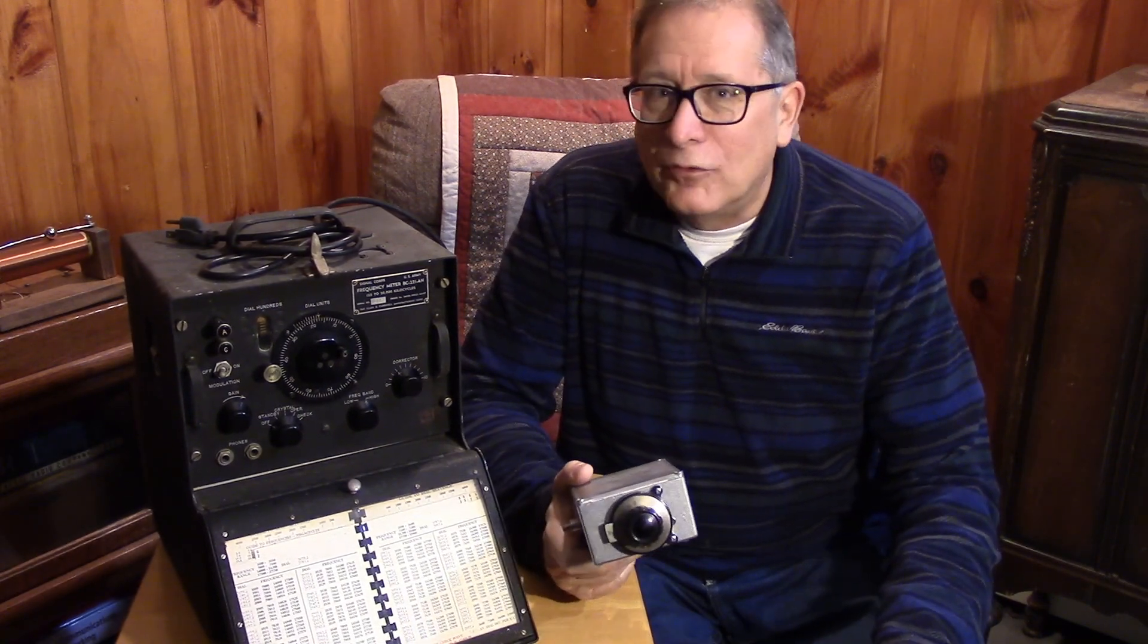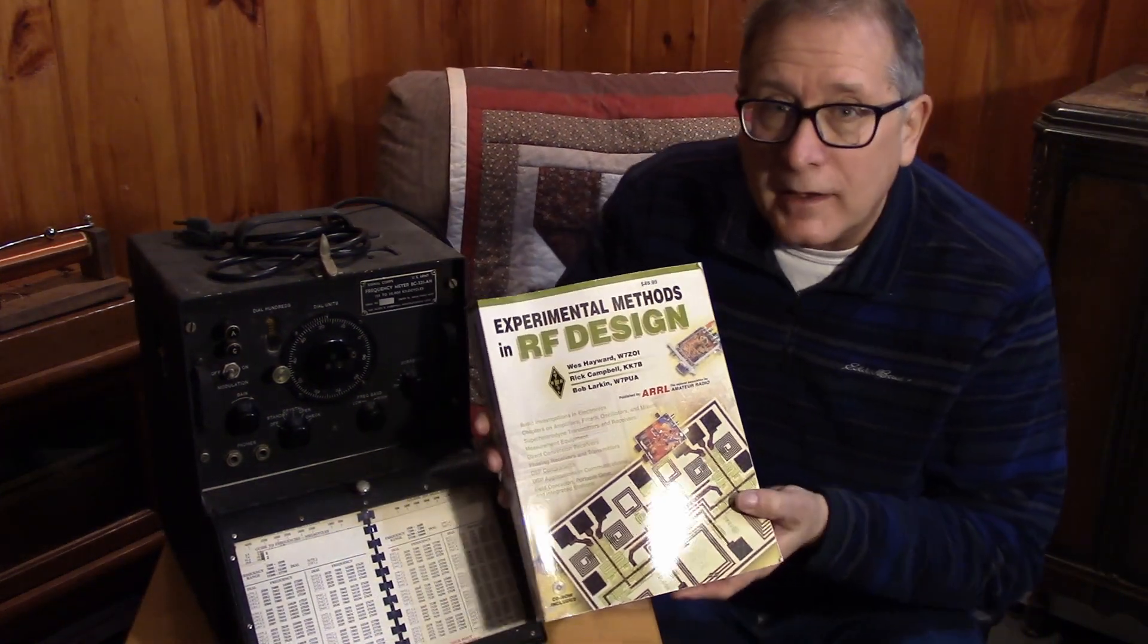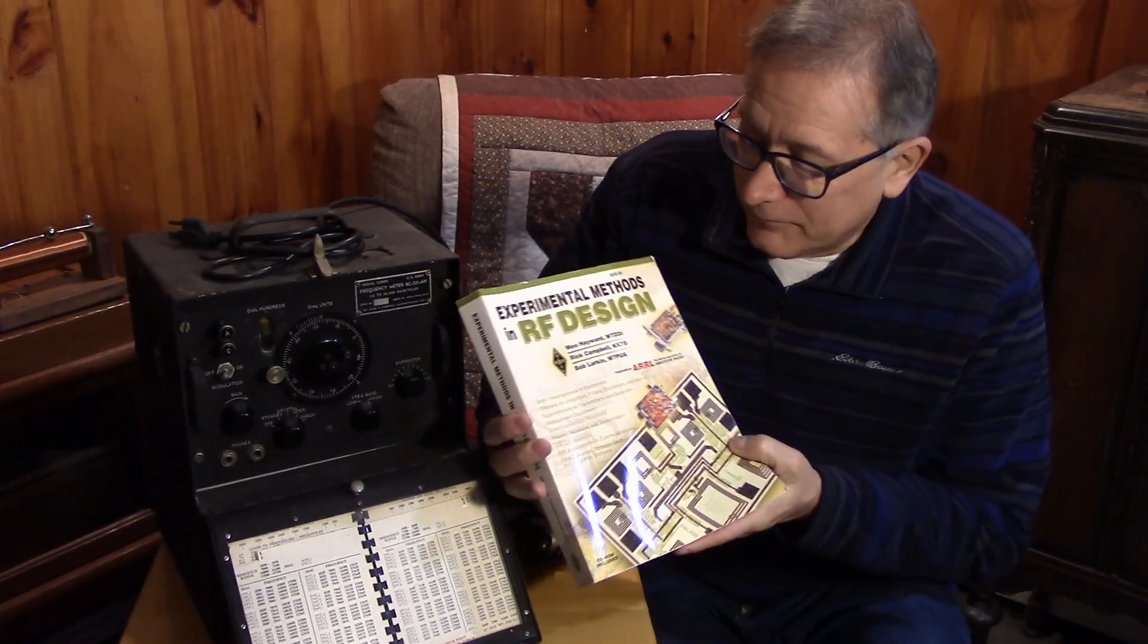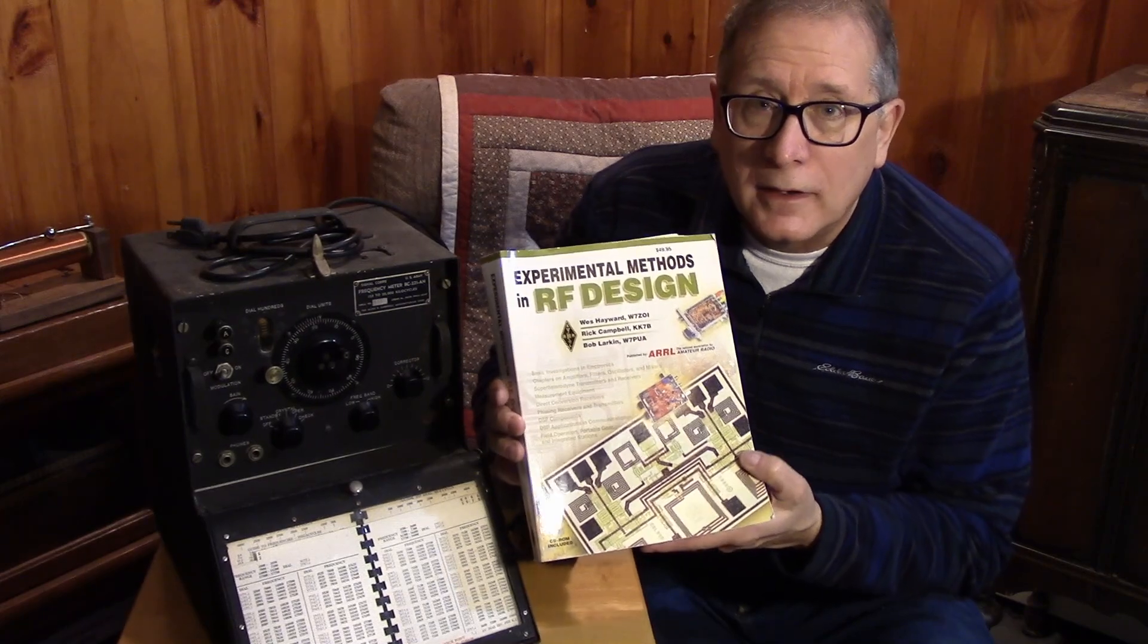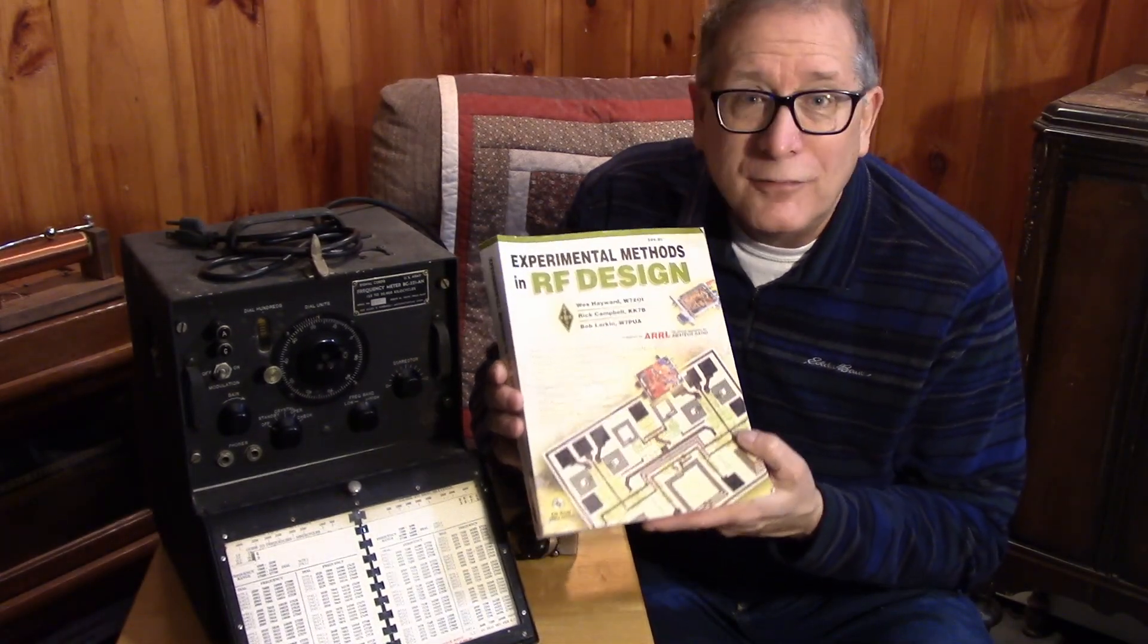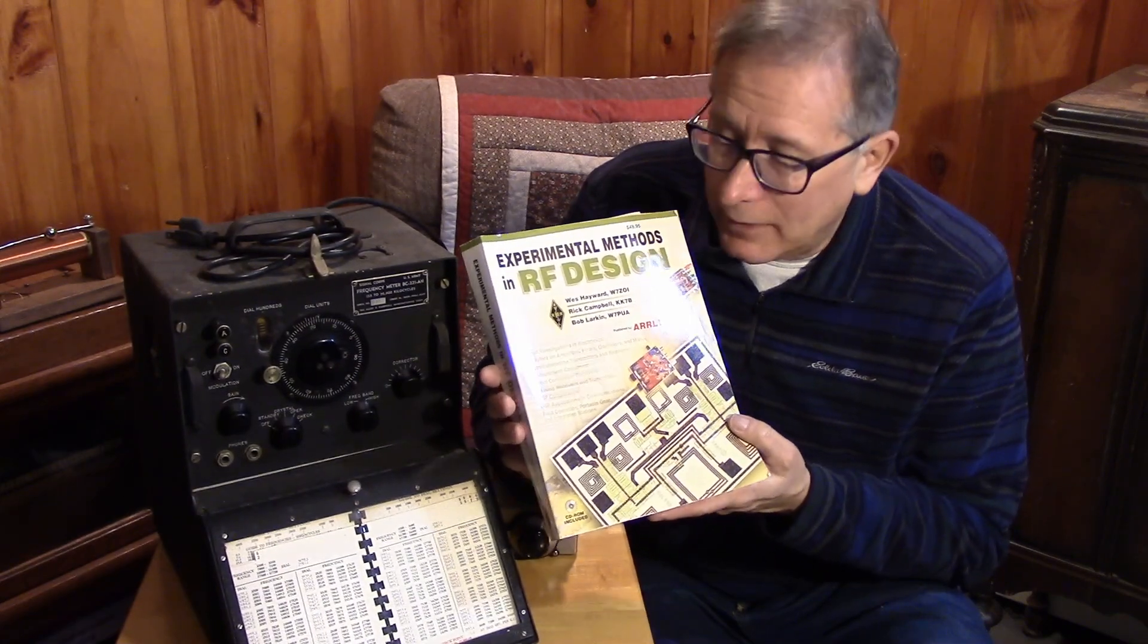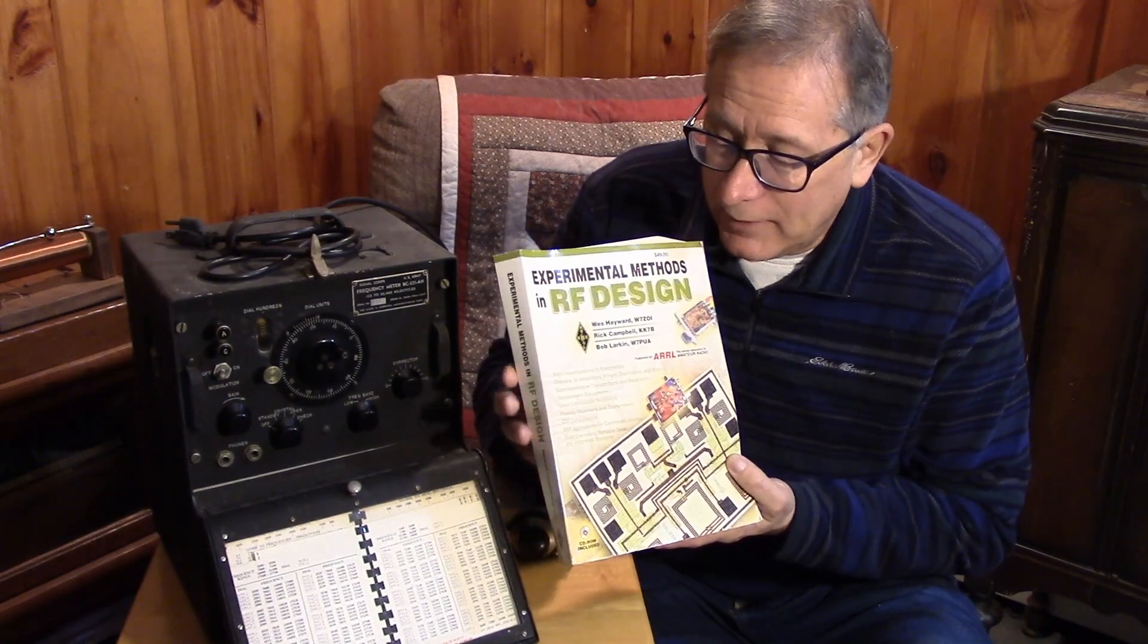That book Experimental Methods in RF Design shows you a simple way to construct an oven using a small styrofoam case, a fan, and a heating element made up of a light bulb. If you want to go that far, Wes Hayward in this book shows you how to make your own little oven.